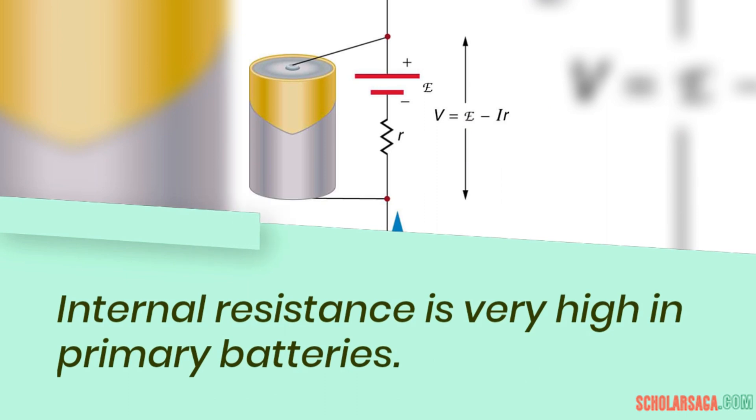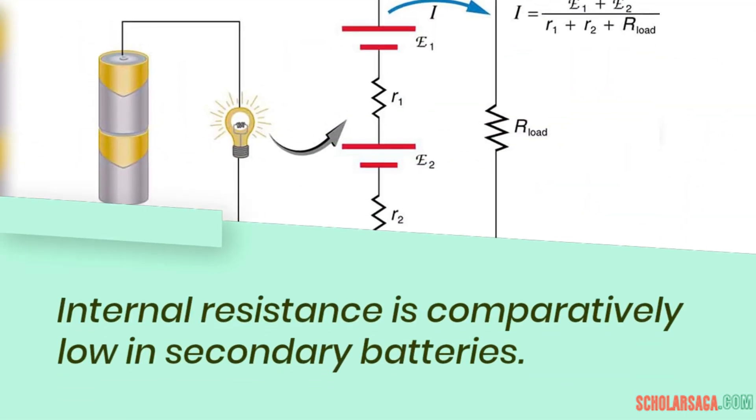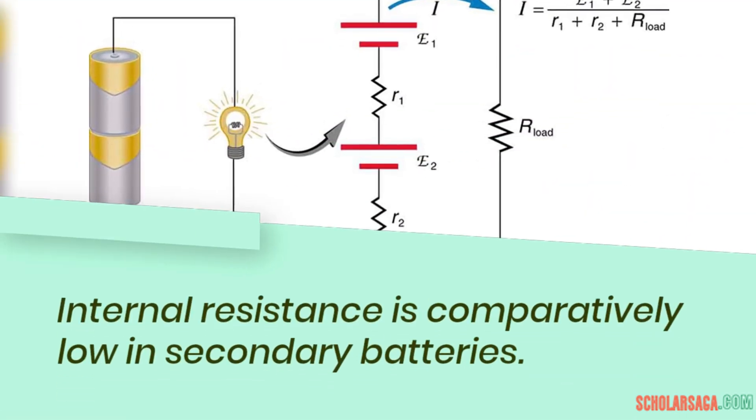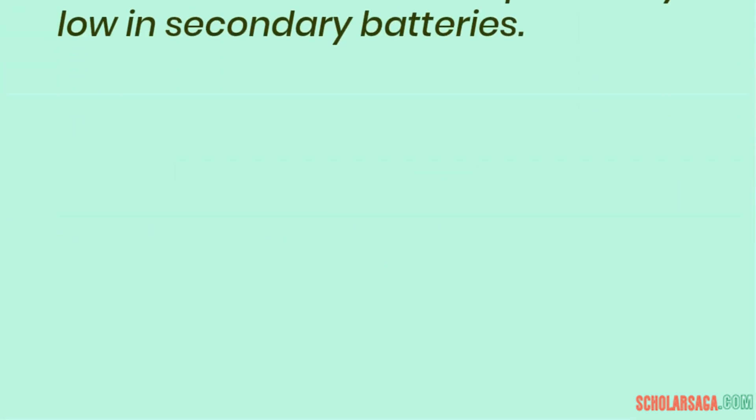Internal resistance is very high in primary batteries. Internal resistance is comparatively low in secondary batteries.